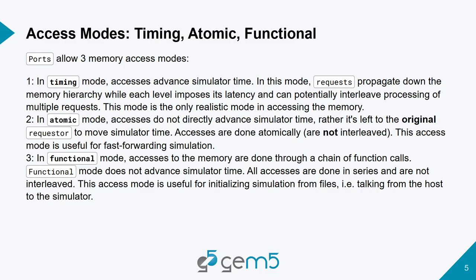In gem5, there are three types of accesses you can do to the memory: timing, atomic, and functional. These are more like conventions that developers have agreed upon. With timing, the requester is assured that the request will take some time — that access will move the simulator time into the future. That is the type of access you want to use when simulating real things.